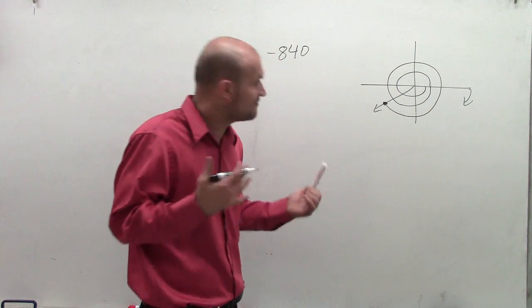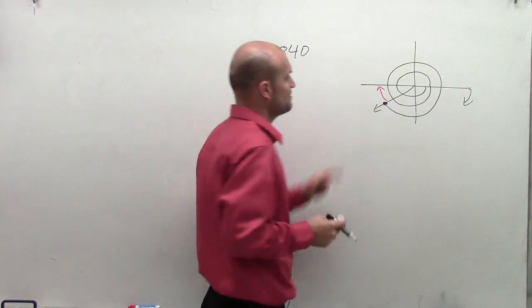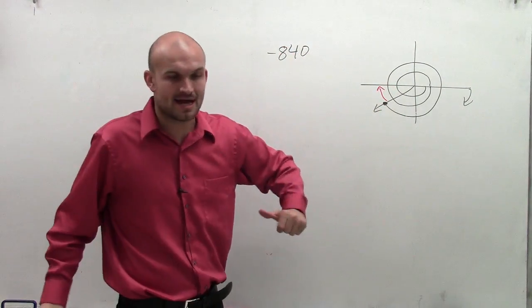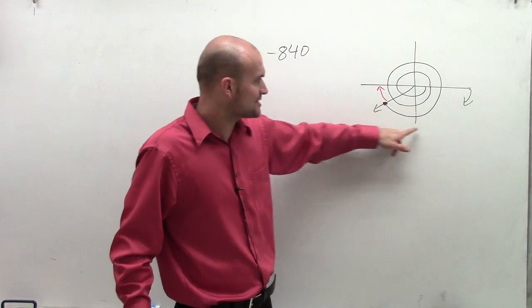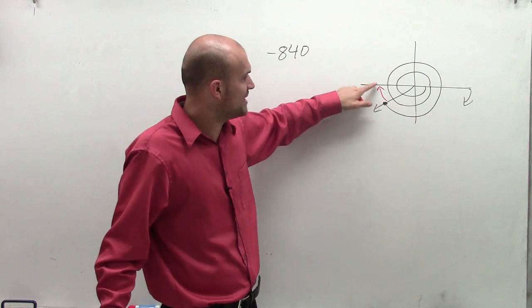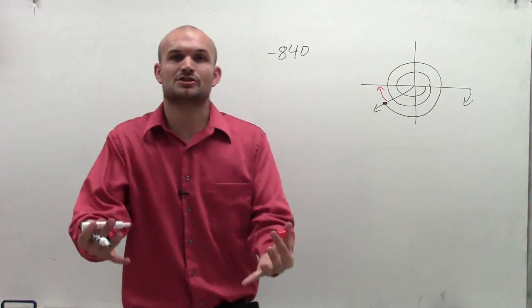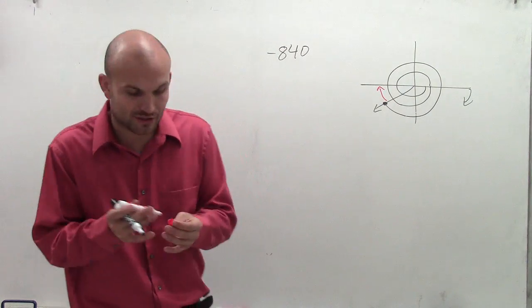So one way we like to do that is to find the reference angle. Now remember the reference angle is the acute angle between my terminal side and my horizontal axis. So since I just went an extra negative 120 degrees, we could easily kind of reason that this space right here is going to be an extra 60 degrees. But I want to make sure I can show you algebraically how to do this as well.